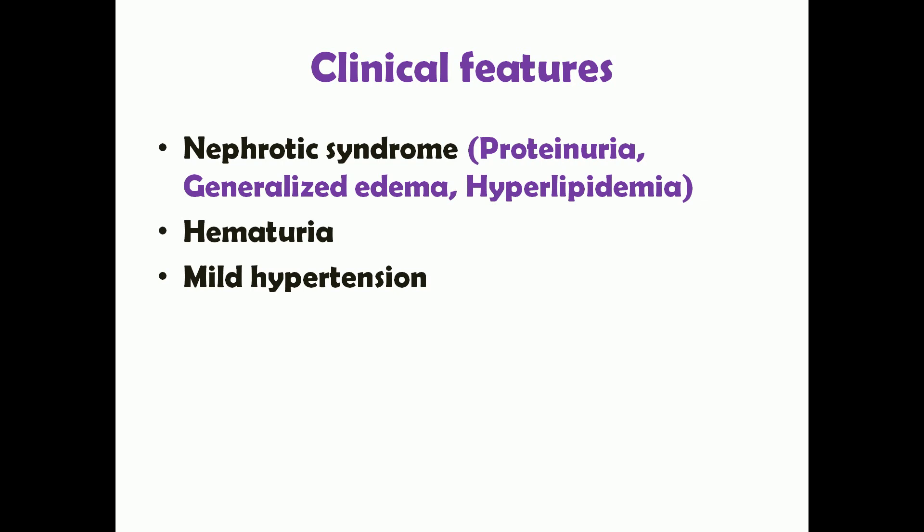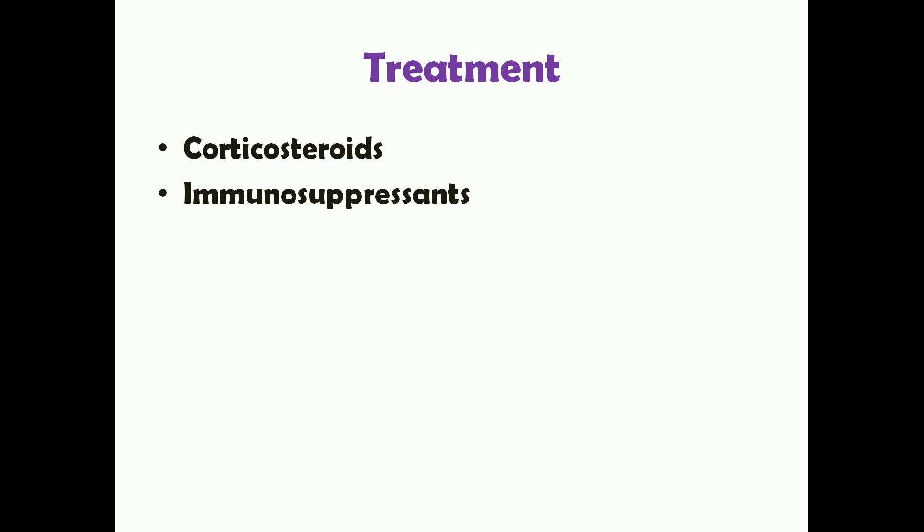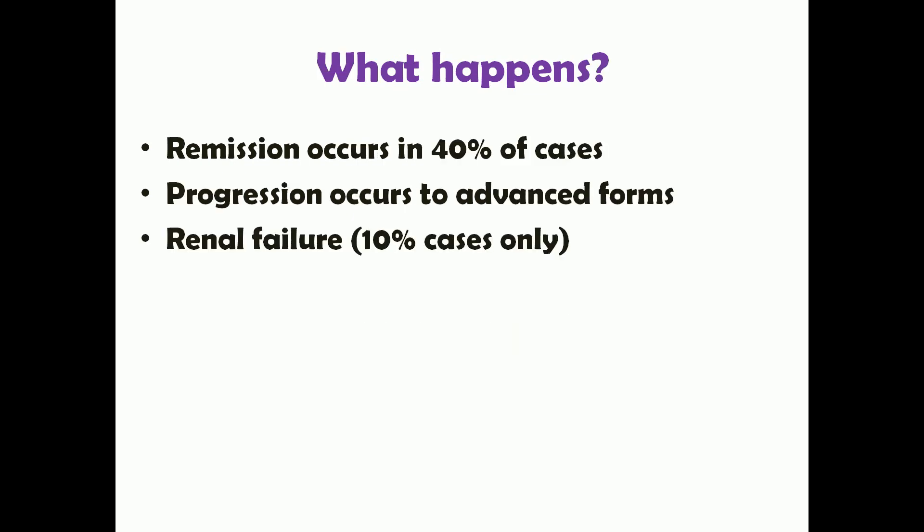The clinical features are basically those of nephrotic syndrome — proteinuria, generalized edema, and hyperlipidemia. These patients can also have hematuria and may develop mild hypertension. Treatment involves corticosteroids and immunosuppressants, both aimed at suppressing immunity, but they are not satisfactory in most cases.